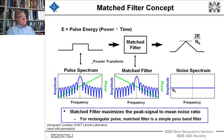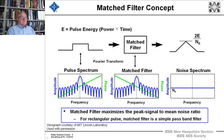Now, what are matched filters? A matched filter by definition maximizes the peak signal-to-mean noise ratio. For a rectangular pulse the matched filter is a simple bandpass filter. Here's the pulse spectrum of that pulse — the matched filter is what you send the returned echo through to maximize the signal-to-noise ratio. This assumes average noise power of white Gaussian noise, and the peak SNR is 2E/N₀ where the energy E is just the power times the time.